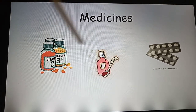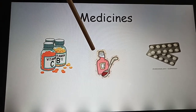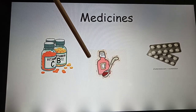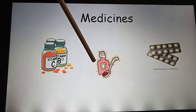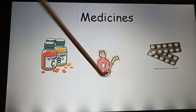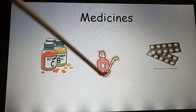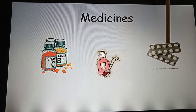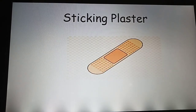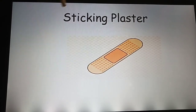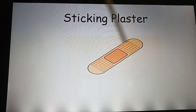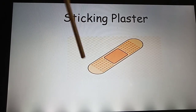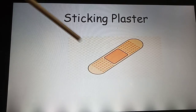These are the types of medicine that we may find in a medical shop. These are vitamin pills, this is a liquid that comes in a bottle and we can take it in a spoon, and these are tablets.